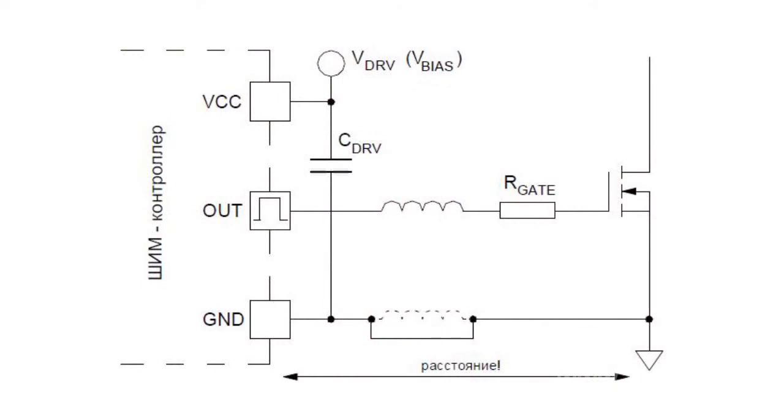Drag controller based control. In pulse power supplies, the transistor is controlled by a driver that is part of a PWM controller. One of the few problems here is the limited output current of the driver, which leads to limited control of high-speed power transistors and excessive dissipated power in the driver.